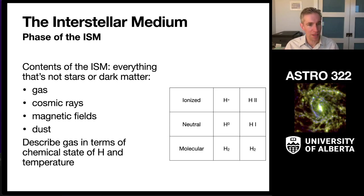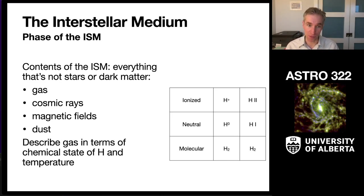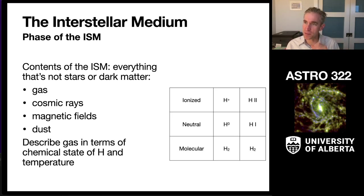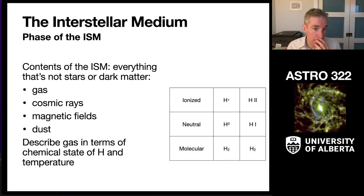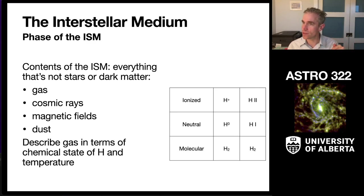Ionized is H+; neutral hydrogen — ordinary isolated hydrogen atoms — are H. Molecular is H₂, the molecule. Because astronomers are interesting people, we often combine this with spectroscopic notation: ionized hydrogen is referred to as H roman numeral II, the second ionization stage. H I is neutral hydrogen, the first ionization state. And then the molecular gas is H₂, which is the same notation used for the ionized gas. This is never, ever confusing.